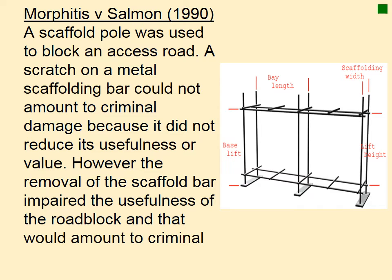In Morphous and Salmon, a scaffolding pole was used to block an access road. A scratch on the metal scaffolding bar couldn't amount to criminal damage because it didn't reduce its value or usefulness — it was a functional item. However, the removal of the scaffolding bar itself, which impaired the usefulness of the roadblock, would amount to criminal damage. This suggests the courts may be distorting the law somewhat in order to reach the right outcome.